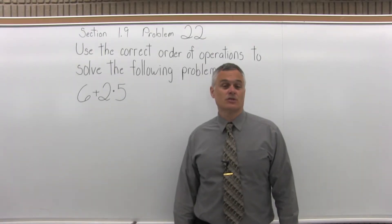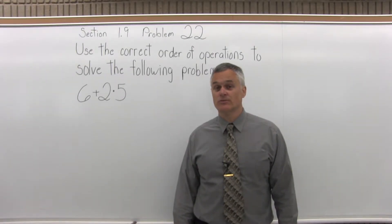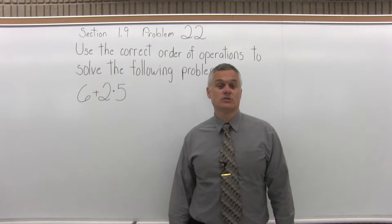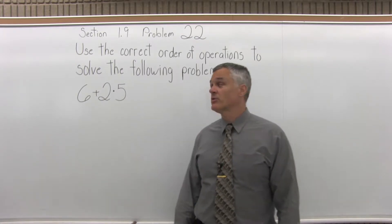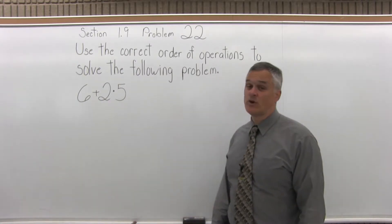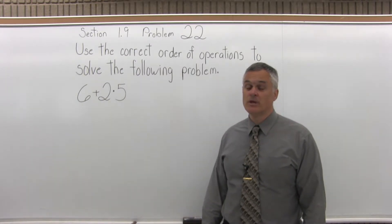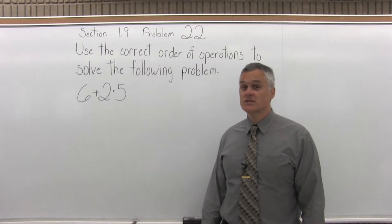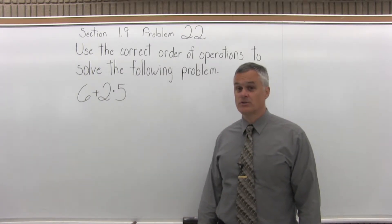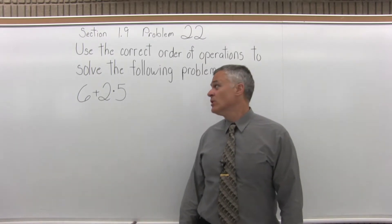This is Section 1.9, Problem 22. It says use the correct order of operations to solve the following problem. We have 6 plus 2 times 5.